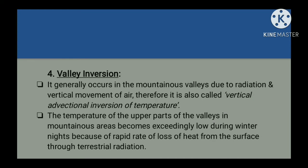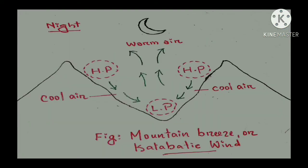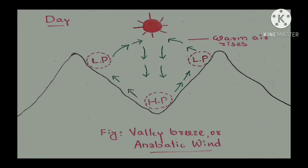The next is valley inversion. Let's understand this with a diagram. During the daytime, the slope of mountains is heated up by the sun and as a result, the air on the slope becomes light and rises up, creating a low pressure zone. The valley floor receives less insolation, so the air there is cold and a high pressure center develops. Therefore wind moves from high pressure to low pressure — from valley to mountain — and is called valley breeze or anabatic wind.